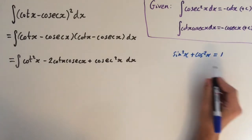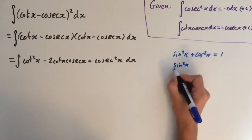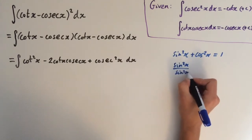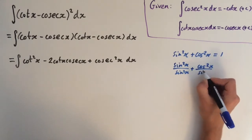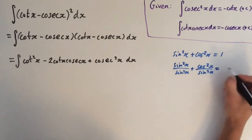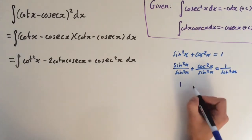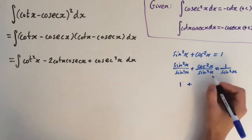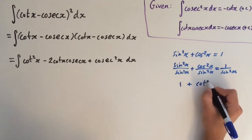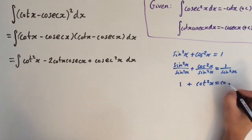We want to divide every term by sin squared. So that gives us sin squared x over sin squared x, plus cos squared x over sin squared x, equals 1 over sin squared x. The first fraction cancels to give 1, the middle term gives cot squared, and the last one is cosec squared.